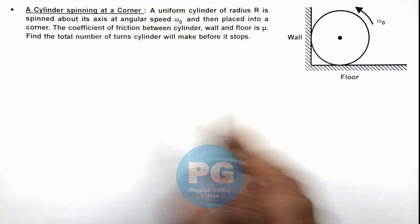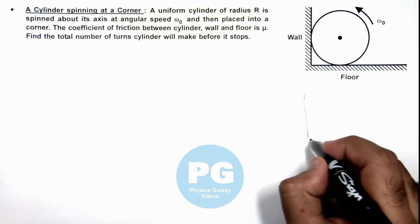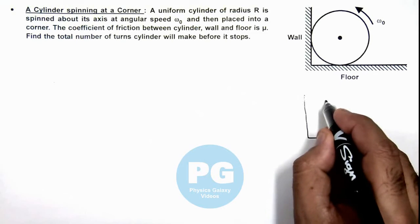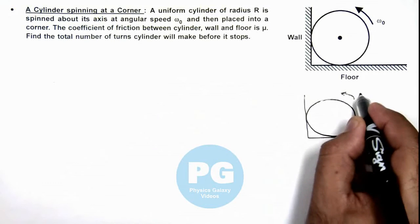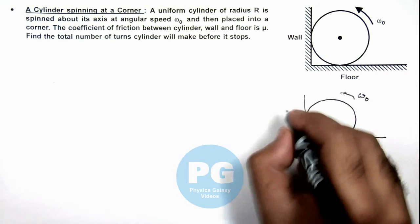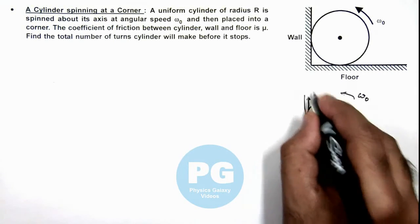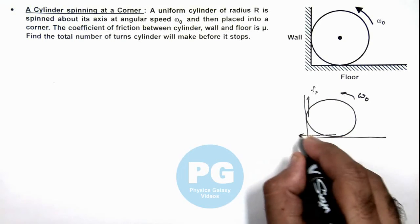Now in this situation, we can redraw the figure for analysis where we are given that the cylinder is rotating at angular speed omega not, due to which it will experience a friction f2 and f1 over here.